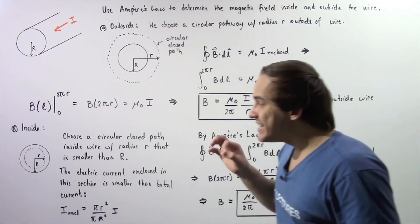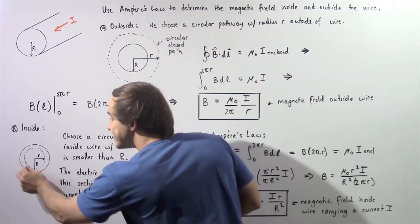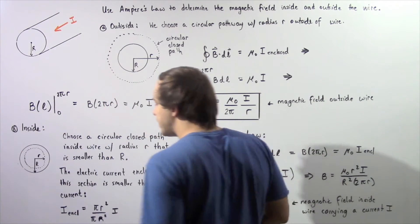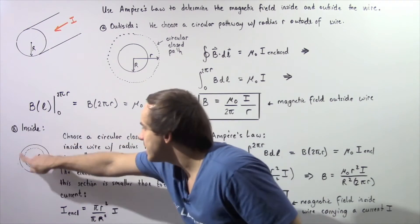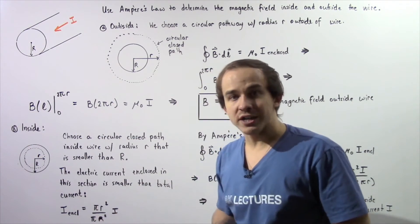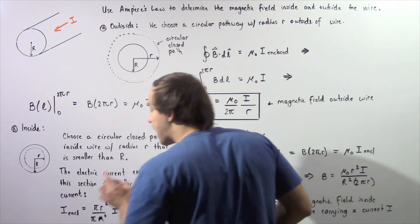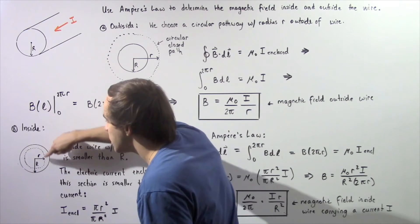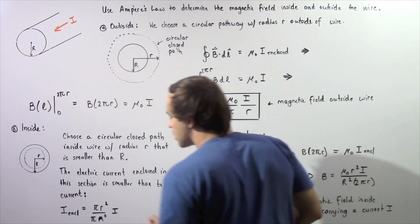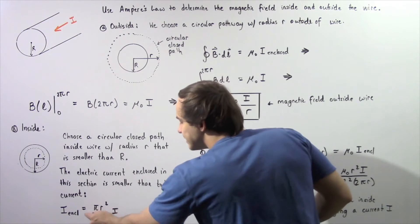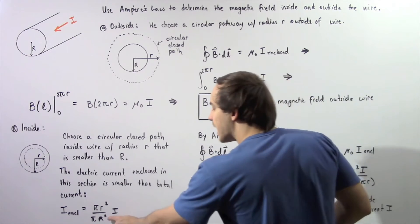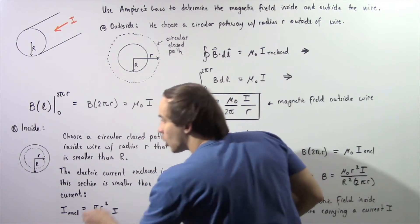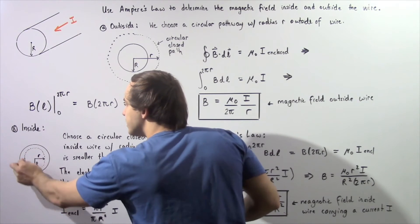Notice that the electric current traveling through this inner region is smaller than the total current that travels through the entire region. We can find the enclosed electric current by taking the total current I and multiplying it by the ratio of the area of the inner region to the area of the outer region: pi lowercase r squared divided by pi uppercase R squared, multiplied by the total electric current I, equals the current enclosed in this section.